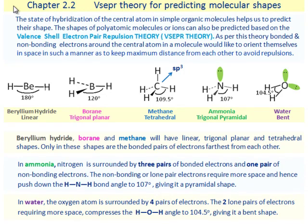VSEPR theory for predicting molecular shapes. The state of hybridization of the central atom in simple organic molecules helps us to predict their shape. For example, the state of hybridization of the central atom carbon in methane is sp3, which helps us to predict its shape to be tetrahedral.